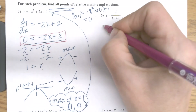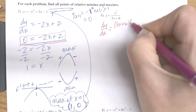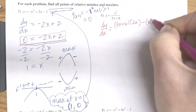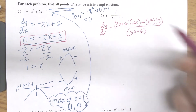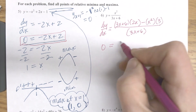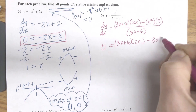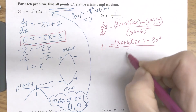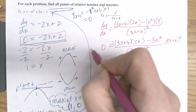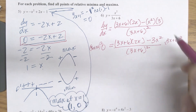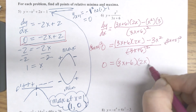We're going to do the same thing with the next one. Find my derivative — it looks like I'm going to have to do a quotient rule. So I do the bottom times the derivative of the top minus the top times the derivative of the bottom over the bottom squared. I set this equal to 0 because I want to find when that equals 0. So I have (3x + 6)(2x) minus 3x squared, all over (3x + 6) quantity squared. I multiply both sides by (3x + 6) squared to eliminate the denominator, leaving 0 equals (3x + 6)(2x) minus 3x squared.